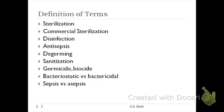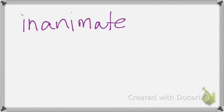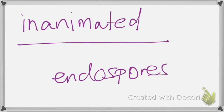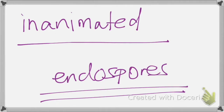How about disinfection? Disinfection is defined as the removal of pathogenic organisms from inanimate objects. When you remove pathogenic organisms from an inanimate object, that is considered disinfection. During disinfection, you do not necessarily remove bacterial endospores, because most disinfectants are not capable of destroying bacterial endospores.